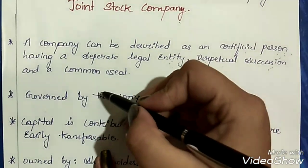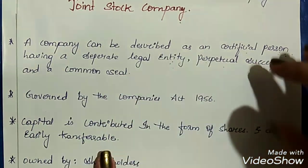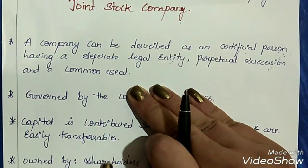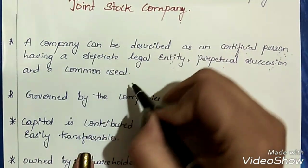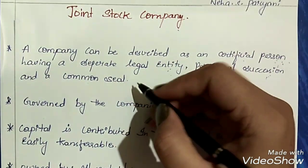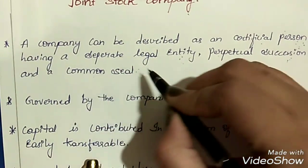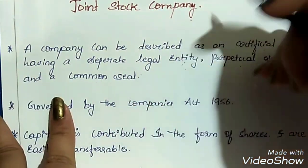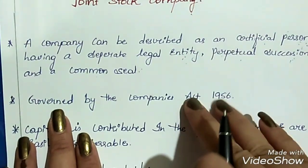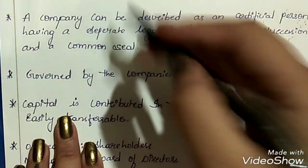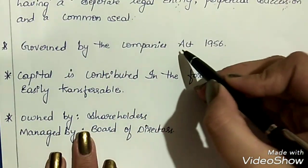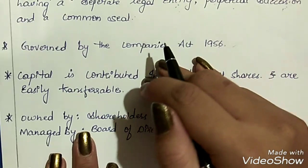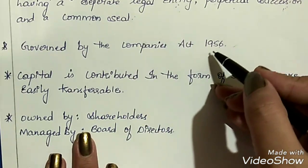The fourth and last aspect is common seal. Because it is treated as an artificial person and is separate from its owners, it has a common seal — you can also call it a stamp. There has to be a common seal on all the necessary documents of this type of company. Joint stock companies are governed by the Companies Act 1956.